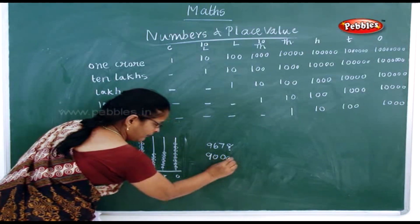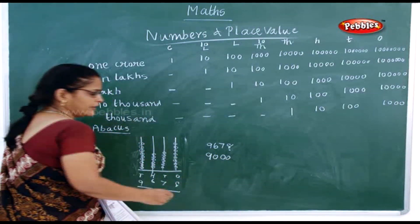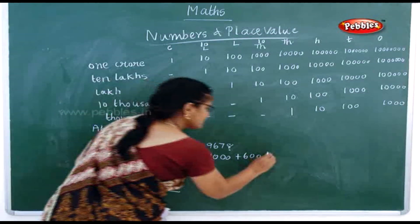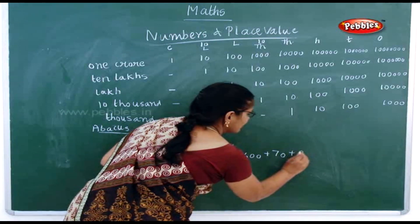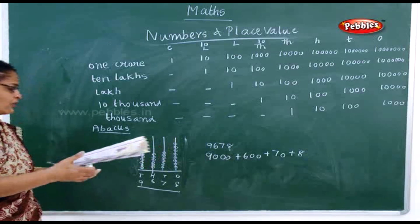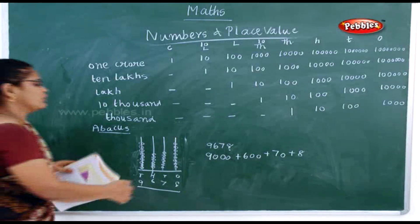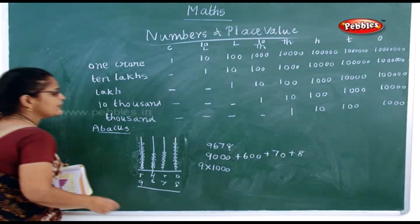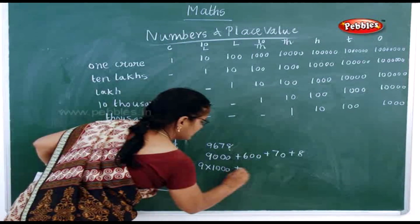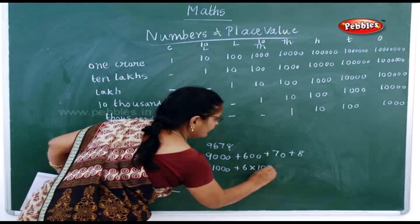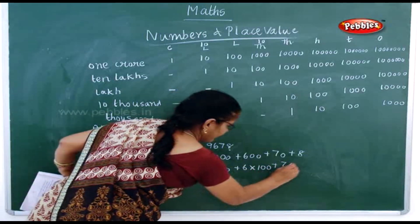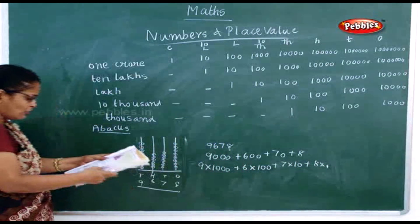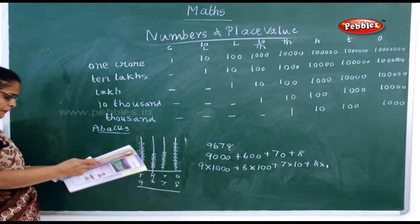Now how will you expand nine thousand six hundred and seventy-eight? You write: nine thousand plus six hundred plus seventy plus eight. In abacus form you write: 9 × 1000 + 6 × 100 + 7 × 10 + 8 × 1. This is how you do it in abacus form.